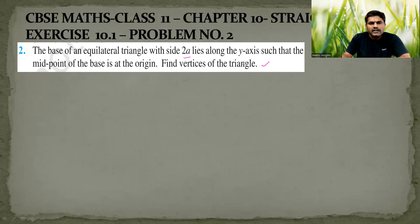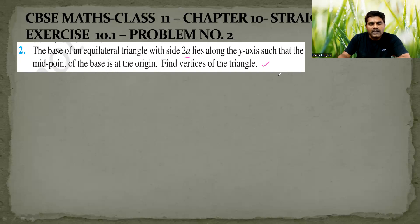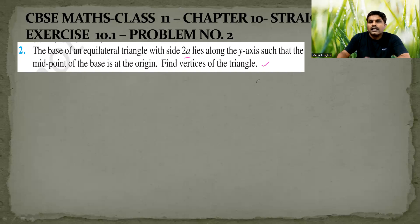In this case, they have given you an equilateral triangle. You know that an equilateral triangle is a triangle with all sides equal. This particular equilateral triangle is along the y-axis, and the midpoint of the base is at the origin.